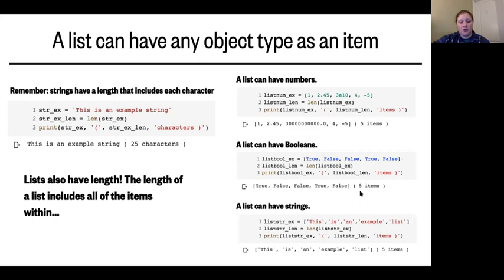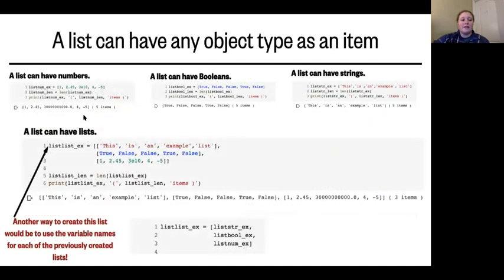A list can also have strings. Here there's a variable set equal to items in square brackets, where each word is an individual string — you can tell because of the beginning and end quotes — and each string is an object in the list, separated by commas. When we do the length on this list, we get five items because there are five words.